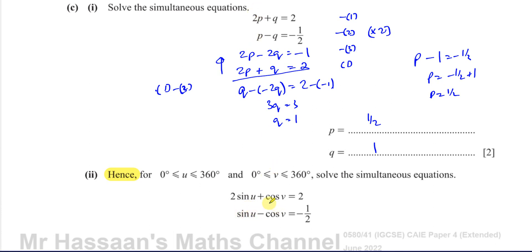Whenever it says hence, look for connections between what you have and the previous part. You can see 2 sine u here and sine u there corresponds to 2p and p, plus cosine v corresponds to plus q, minus cosine v to minus q, with values 2 and minus half. They're basically identical to each other.